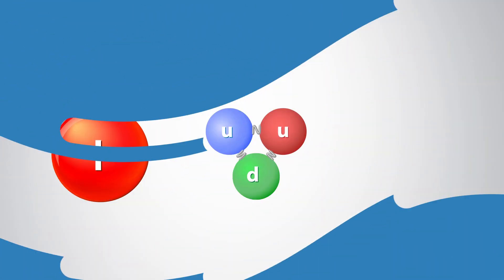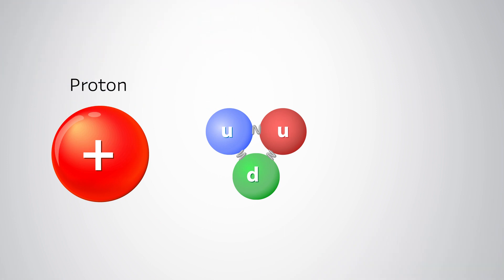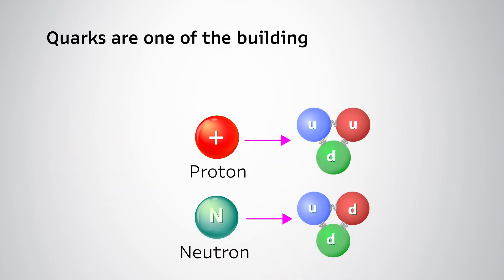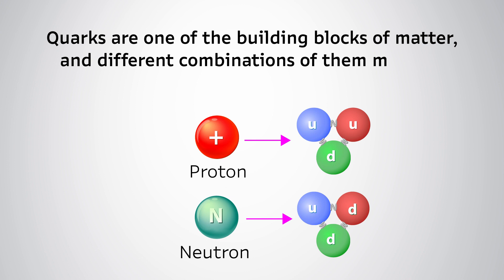Protons are positively charged subatomic particles, made up of three fundamental particles called quarks. Quarks are one of the building blocks of matter, and different combinations of them make up different subatomic particles.